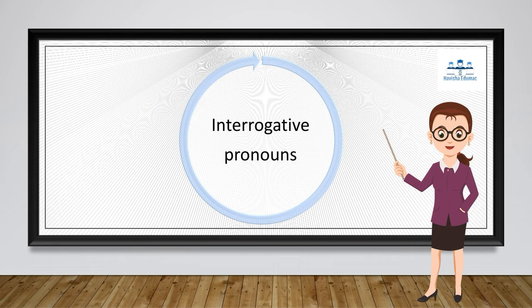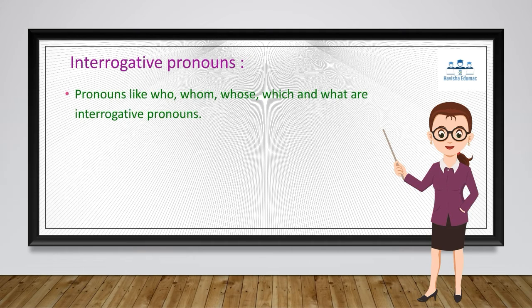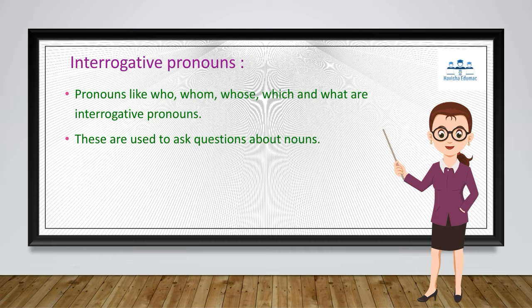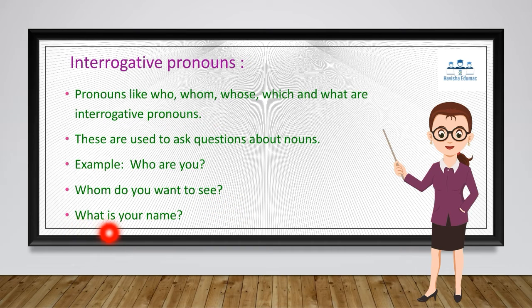Now let us see about interrogative pronouns. The pronouns like who, whom, whose, which, and what are interrogative pronouns. They are used for asking questions about nouns. For example: 'Who are you?' 'Whom do you want to see?' 'What is your name?' In all these examples, the interrogative pronoun is used to ask a question about the noun.